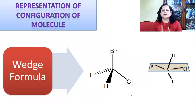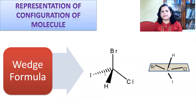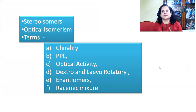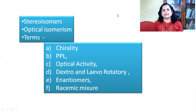The second representation is the wedge formula. In this structure, carbon is in a plane, and bromine and chlorine are in the plane. Hydrogen is above the plane (shown by a thicker wedge line) and iodine is below the plane (shown by a dotted line). So chlorine, bromine, and carbon are in one plane, hydrogen is above, and iodine is below. That is how we represent the configuration of a molecule using the wedge formula. In summary, we learned about stereoisomers, optical isomers as one type of stereoisomers, and key terms: chirality, plane polarized light, optical activity, dextro and levorotatory, enantiomers, and racemic mixture.